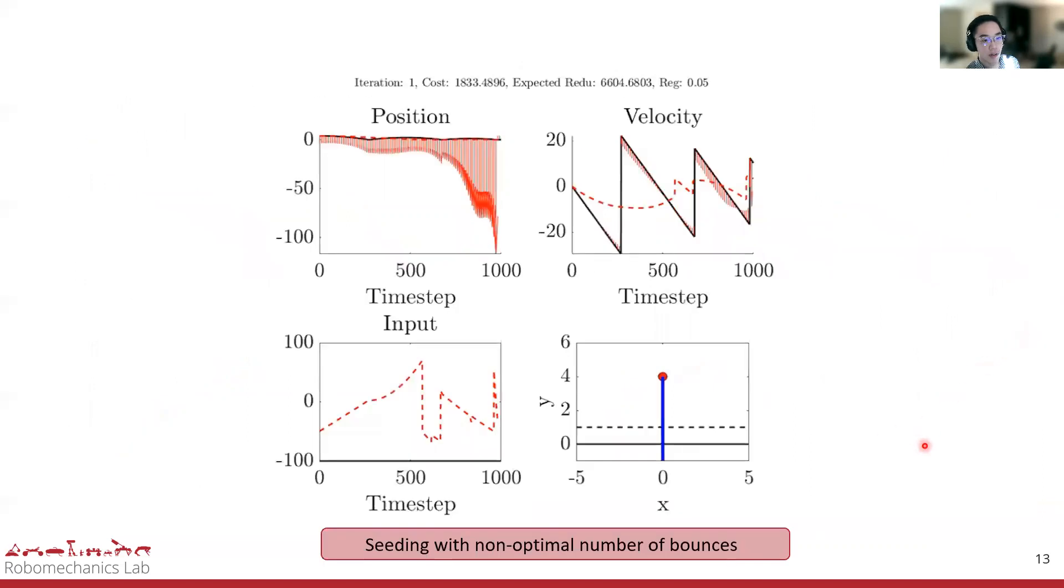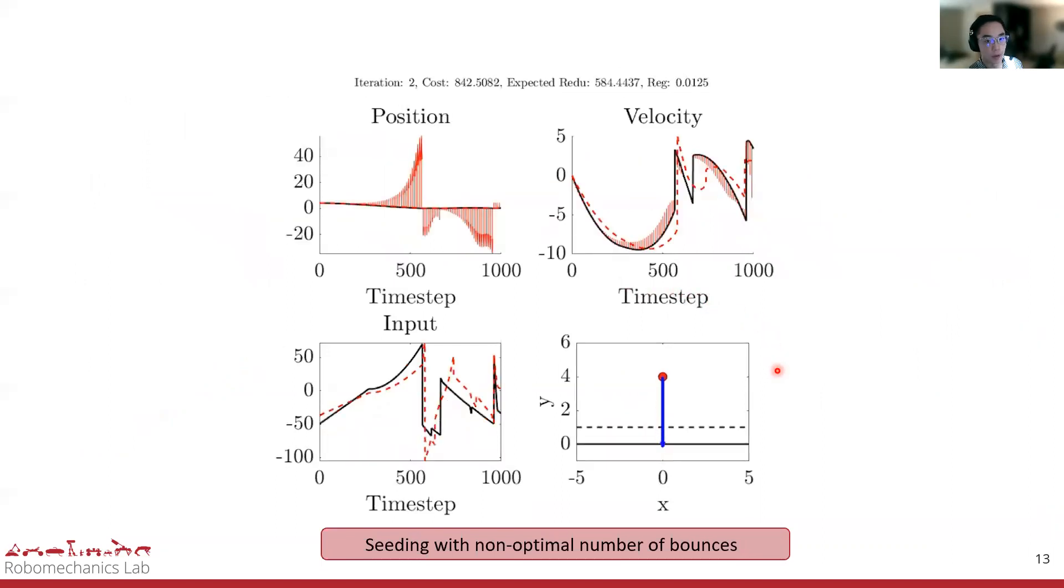In this example, we have the same problem set up, but we give the optimizer a bad seed of three bounces when it only needs one. However, the algorithm is still able to find the same optimal one-bounce trajectory as we previously saw.